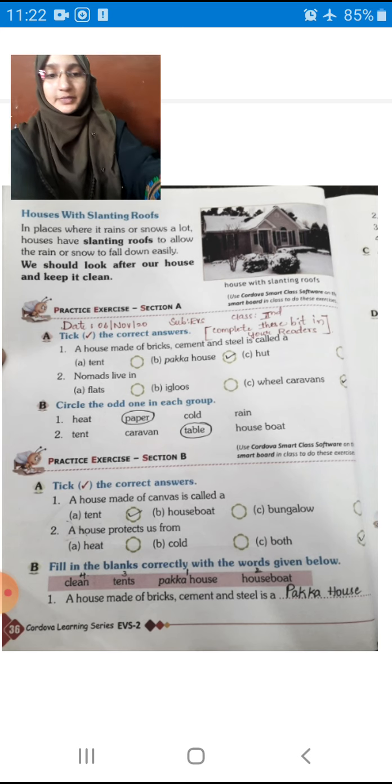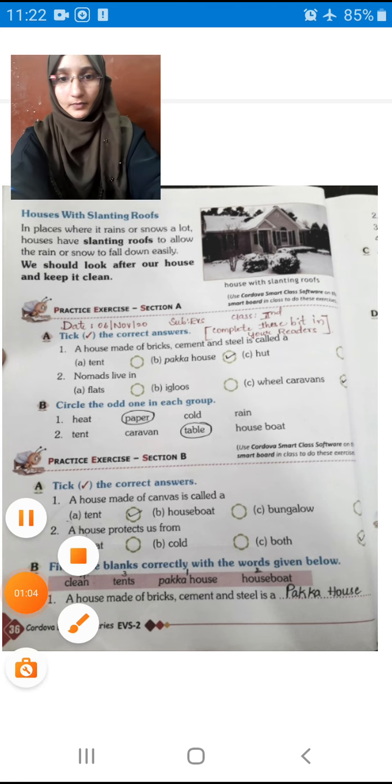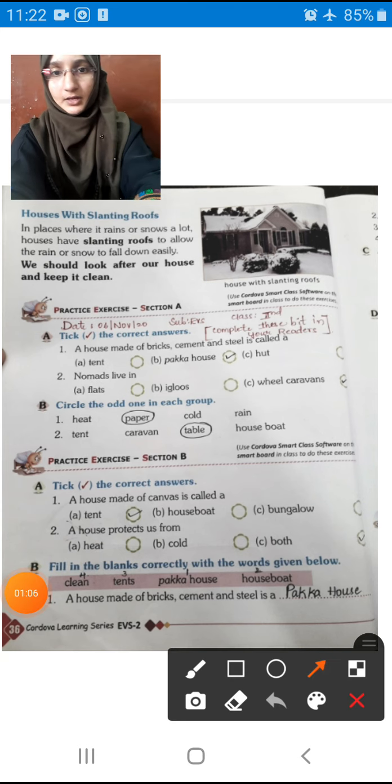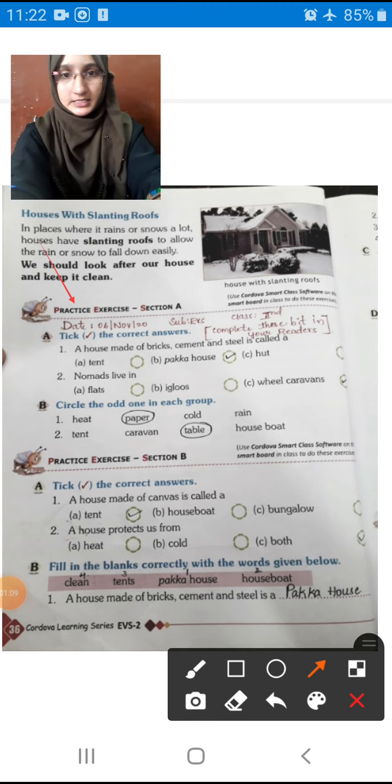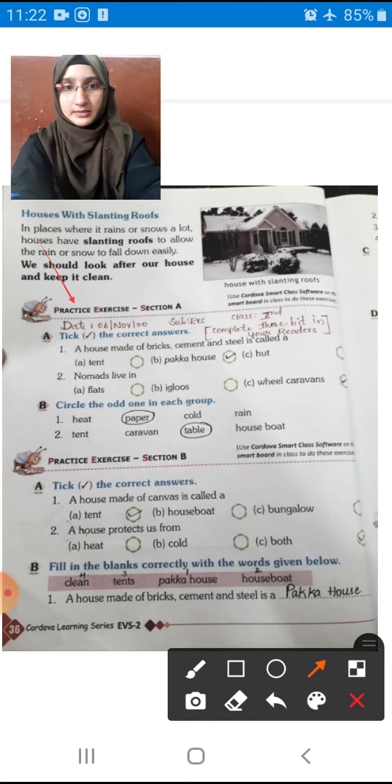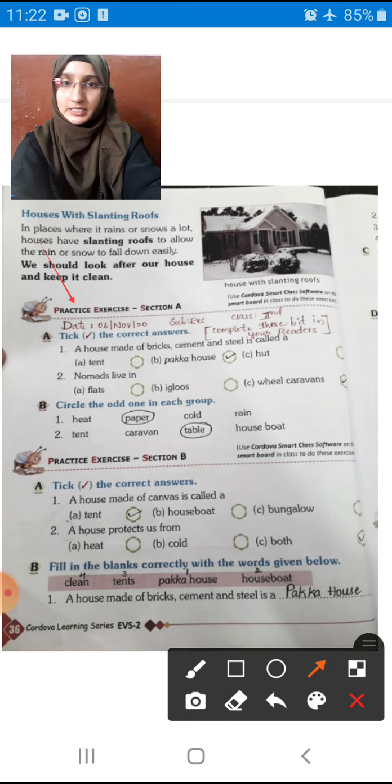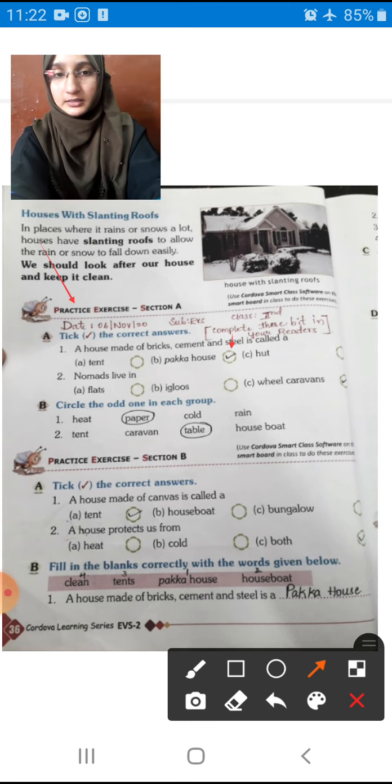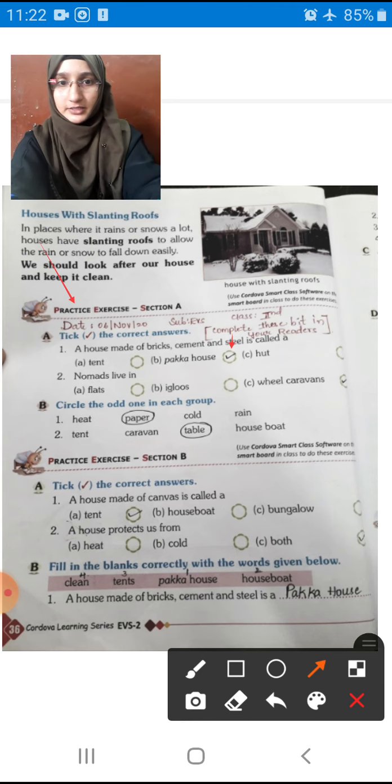Okay, so today we will complete our exercise bit. Let's start. Hold one pencil in your hands and simultaneously complete the work children. First one: A house made of bricks, cement and steel is called? A house which is made of cement, bricks and steel, that house is called? Obviously, that house is called Pakka house. So make a mark in the second circle children. Tent is made by cloth, hut is made by grass. So that's why Pakka house is made of cement, bricks and steel children.